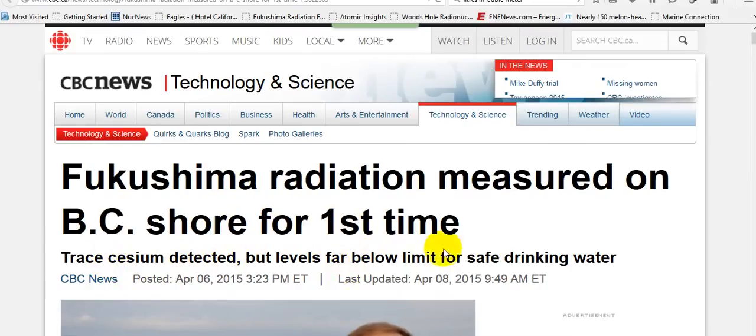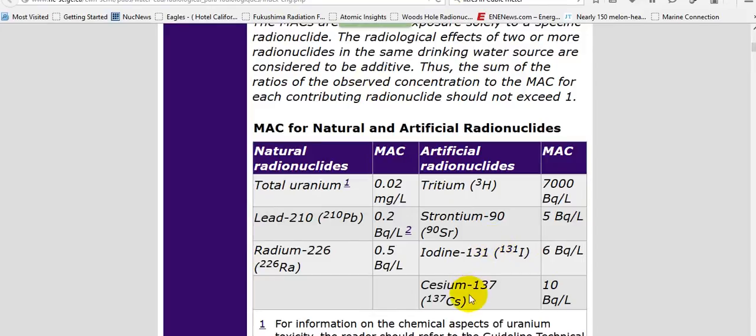Trace cesium detectable levels far below limits for safe drinking water. Because someone jacked our drinking limits and included artificial radionuclides. Do you have any idea what's really happening here? Do you have any idea how dangerous this game they're playing with us is? There's no way out of this.